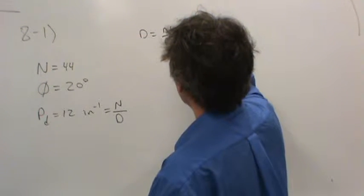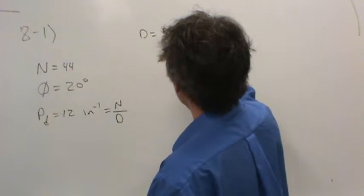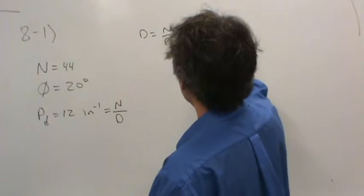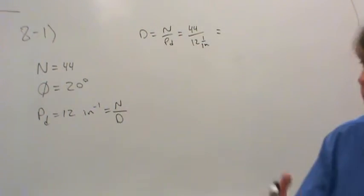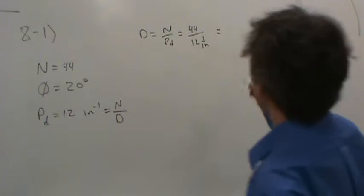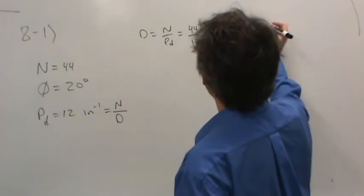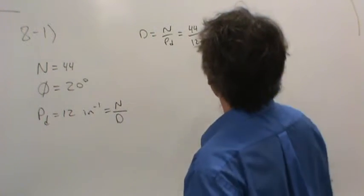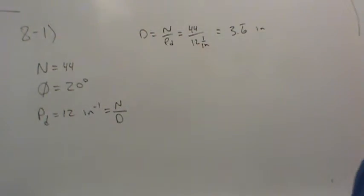The number of gear teeth we know is 44. Diametral pitch is 12 inverse inches. And so take your calculator out and take 44 over 12. What do you get? 3.67. So it's 3.6 repeated if I remember right. And that would be inches. So there's the diameter of the gear.